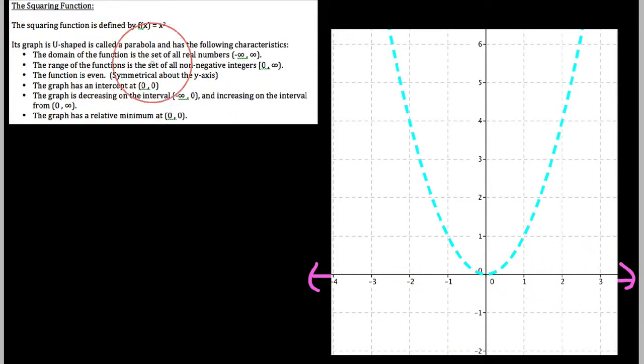Other things to mention about this, the range. So the range, that would be y values. Notice that the lowest height that it ever gets to is a height of zero, and it actually includes zero, so I shouldn't have done a dotted graph. It should be a solid graph, but it actually includes a height of zero and goes up forever and ever, so our range is from zero and including zero up to infinity.